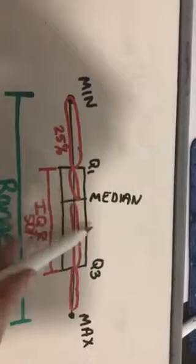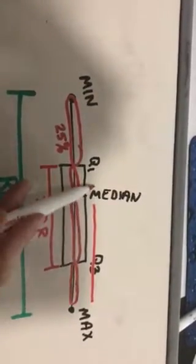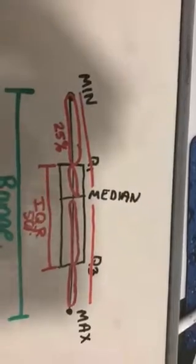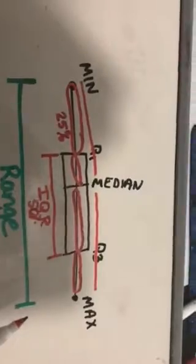And then you've got the median and everything to the right of the median that would be 50% of the data. Everything to the left of the median would be another 50% of the data. So just another way to look at your box plot.